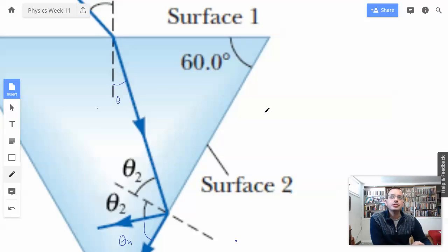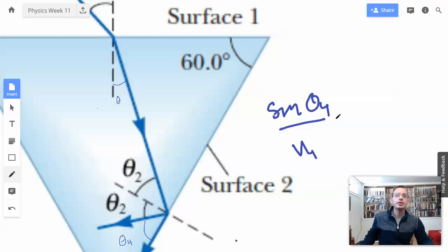Alright, so sine of theta 4 over velocity 4 equals sine, I'm going to use 2 this time, over velocity 2.